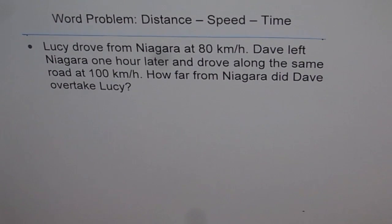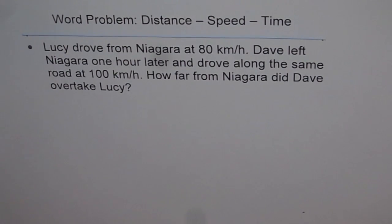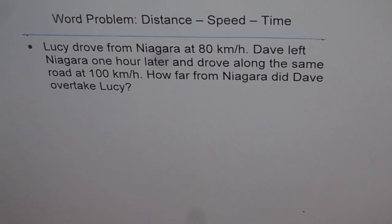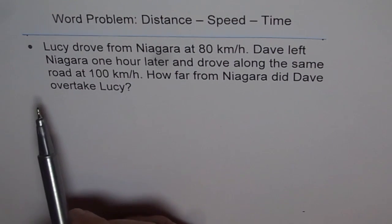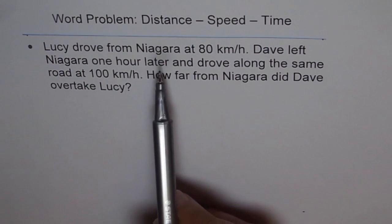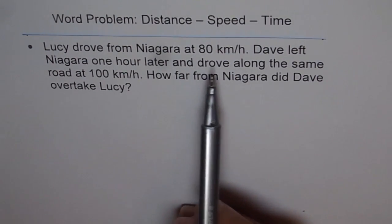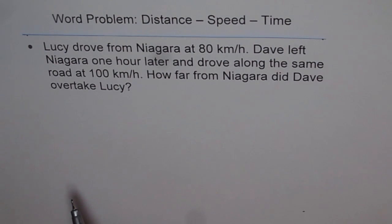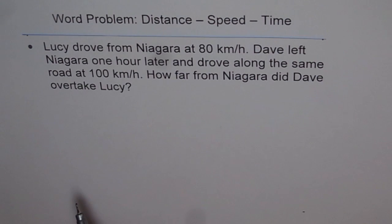Let us try to understand how to solve word problems involving distance, speed, and time. The question here is: Lucy drove from Niagara at 80 kilometers per hour. Dave left Niagara one hour later and drove along the same road at 100 kilometers per hour. How far from Niagara did Dave overtake Lucy?